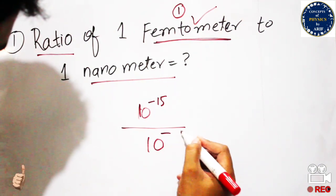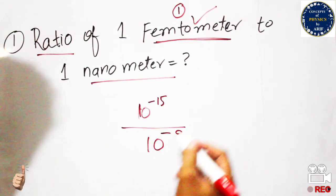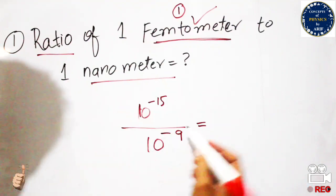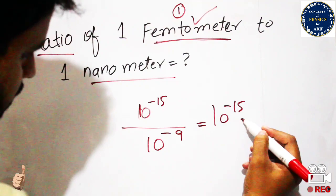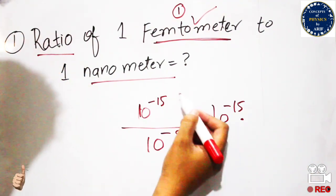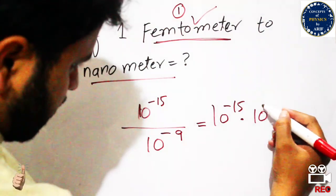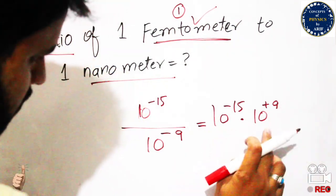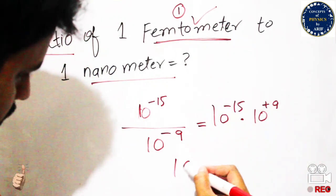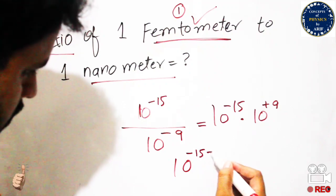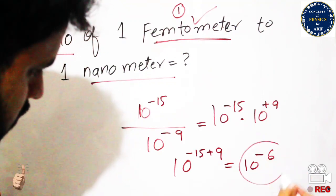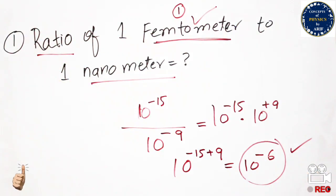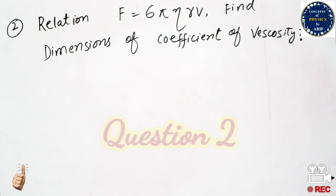The solution is 10 to the minus 15 divided by 10 to the minus 9. The denominator moves to the numerator and its sign changes from negative to positive, giving 10 to the power plus 9. Since the bases are the same, the powers are added: minus 15 plus 9 equals minus 6. The final answer is 10 to the power minus 6.